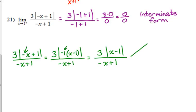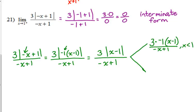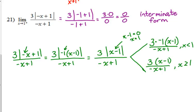Now let's write it as a piecewise function. When we write absolute values as piecewise functions, we multiply by negative 1 when x is less than 1 — that's the changing point, where x minus 1 equals 0. For the second piece, we keep everything the same and drop the absolute value when x is greater than or equal to 1.